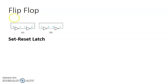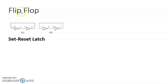Dear students, in this video I will be discussing about flip-flop. Flip-flop, as the name tells, is an electronic device of two stable states. Those two stable states are 0 and 1, and it can store a bit of information.